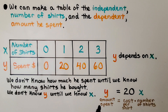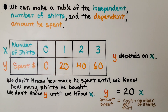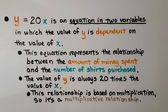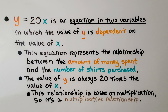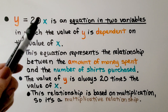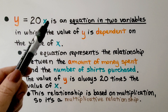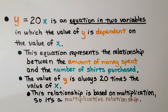Y, the amount spent, is equal to the cost per shirt — that would be our rate — $20 a piece, multiplied by the number of shirts. Y is equal to 20x is an equation in two variables in which the value of y is dependent on the value of x. The value of y is always 20 times the value of x. This relationship is based on multiplication, so it's a multiplicative relationship. When the coefficient is directly next to the variable, it means multiplication.